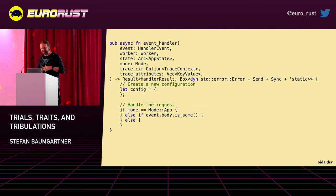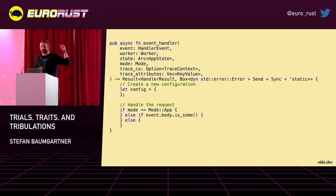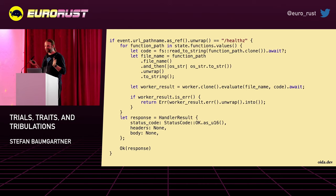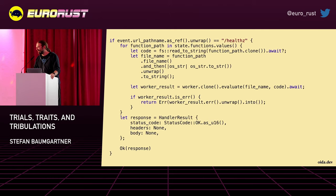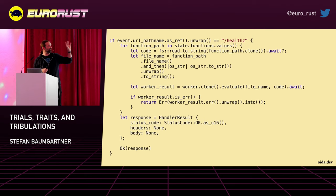What's also interesting is that this function returns a result, so there might be errors — either I get a result or I get an error. This is what the function signature tells me. Let's dive into the application mode. In the application mode, apparently we are not only executing JavaScript but also checking if our JavaScript application is healthy, which means it doesn't produce any error. So we have this health endpoint and there's also a lot of code in there.